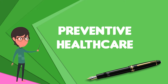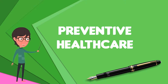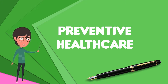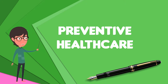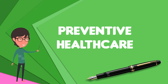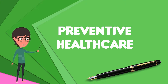Health, disease, and disability are dynamic processes which begin before individuals realize they are affected. Disease prevention relies on anticipatory actions that can be categorized as primal, primary, secondary, and tertiary prevention.